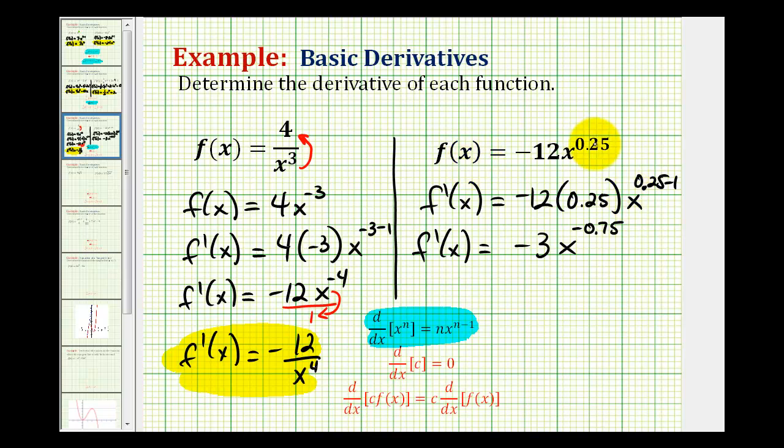And normally if the original exponent is in decimal form we can leave the exponent in decimal form. But if we did want our exponent to be positive we would have to move it down to the denominator. So our final derivative would be negative. Notice how the 3 stays in the numerator and we're only moving down the x part. So we'd have x to the positive 0.75 in the denominator.